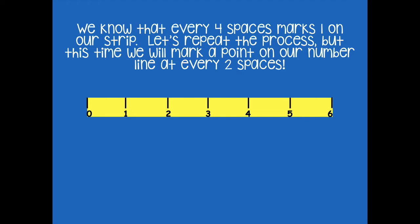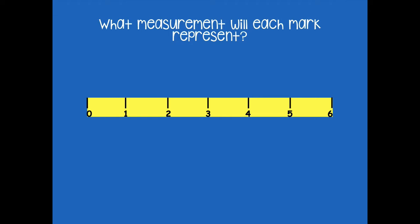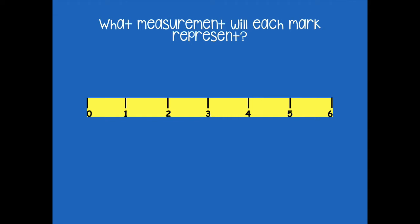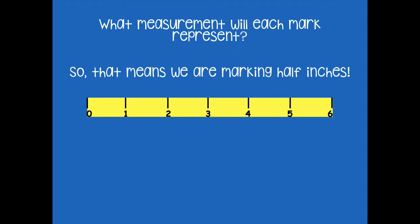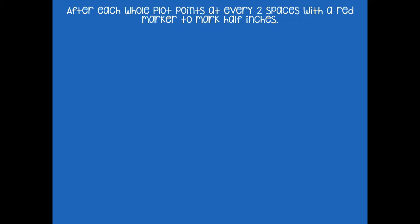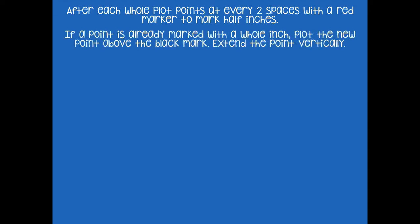We know every four spaces marks one whole inch on our strip. Now let's repeat this process, but this time we're going to mark a point every two spaces. What measurement will each mark represent? We're taking one whole inch and splitting it into two parts — that's going to be one half. So we're marking half inches. After each whole, plot points at every two spaces with a red colored pencil to mark half inches. If a point is already marked with a whole inch, plot the new point above the black mark and extend the point vertically.